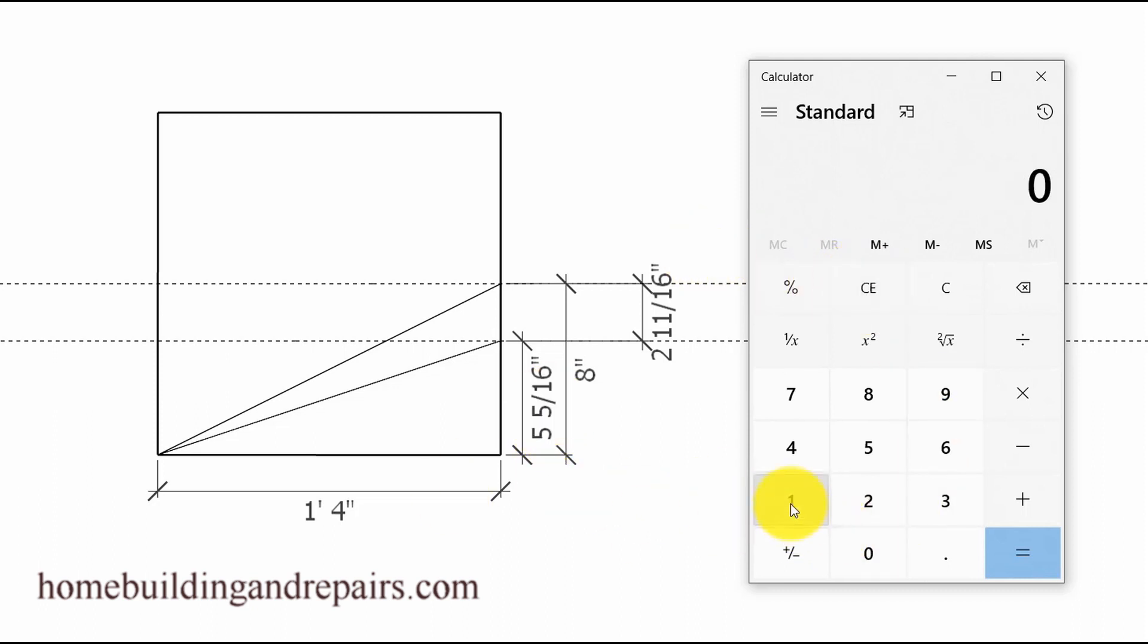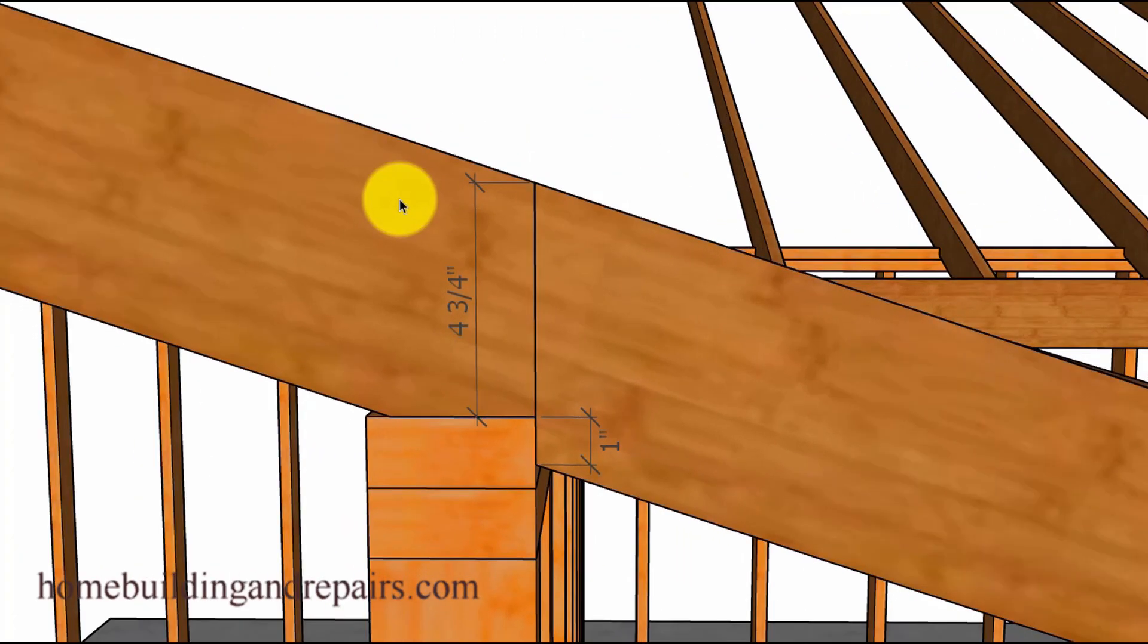And then we will do the same for this, so we have 1.333 times 6 equals basically 8 inches. And then if we subtract the difference, I believe it was 5.33, we're going to get 2 and 5 eighths inches basically, or 2.65 will be the difference in the wall framing heights if the overhang is going to be 16 inches and going to be for a 4 and 12 and a 6 and 12 roof pitch.